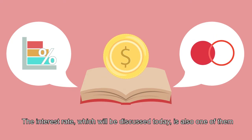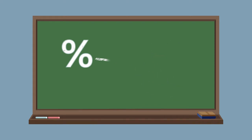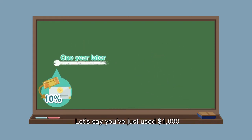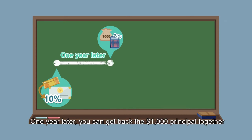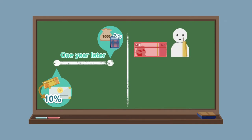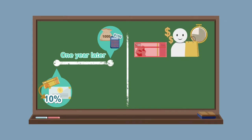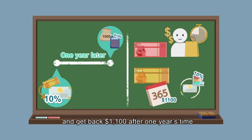The interest rate, which will be discussed today, is also one of them. The nominal interest rate is the interest rate without taking inflation into account. Let's say you've just used $1,000 to buy a one-year bond with a 10% yield. One year later, you can get back the $1,000 principal together with an extra $100 as interest. This $100 can be regarded as the compensation for delaying your consumption. In other words, you pay $1,000 today and get back $1,100 after one year, so the nominal interest rate of this bond is 10%.